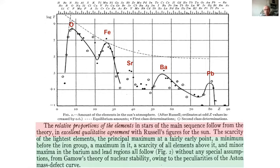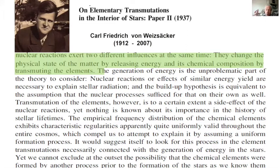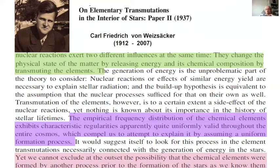The neutron was discovered the next year, 1932. At that time an interesting paper by Carl von Weizsäcker — at the age of 25 — made a very thorough, penetrative analysis of what was known about stellar composition. He recognized that nuclear reactions certainly take place in stellar interiors and one could try, as Atkinson did, to produce the observed composition. But on the other hand, he recognized that we cannot exclude the possibility that the chemical elements were formed by another process prior to the formation of the stars.